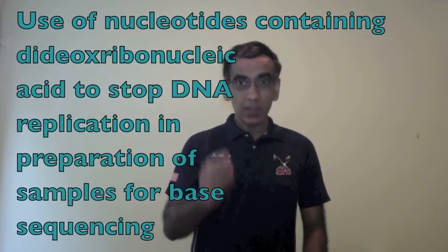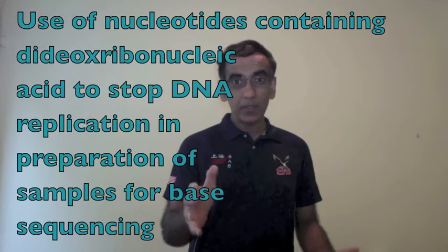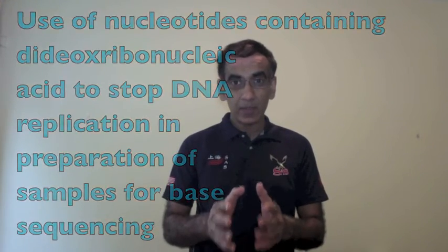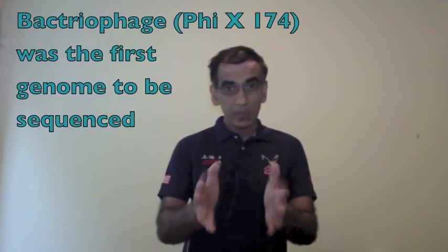In 1977, Frederick Sanger and his team sequenced the genome of the bacteriophage PHYX-174. This breakthrough, like so many things in science, came on the back of the great discoveries of the past, like the elucidation of the structure of DNA by Watson and Crick in the 1950s.